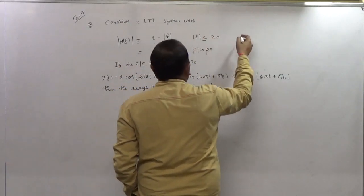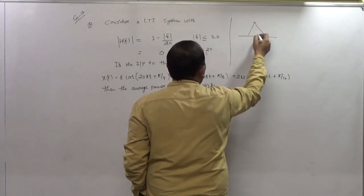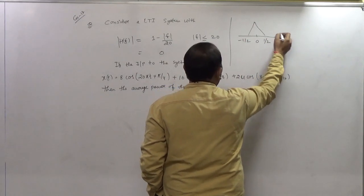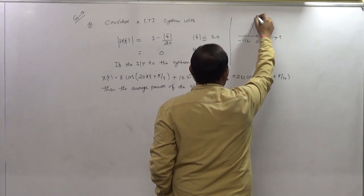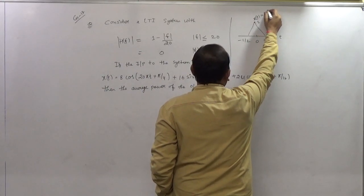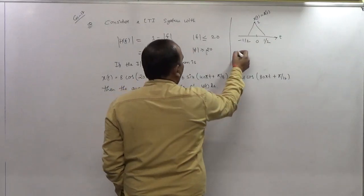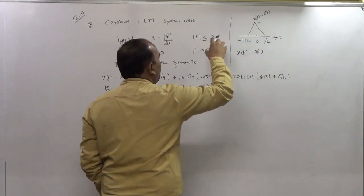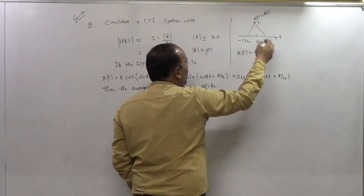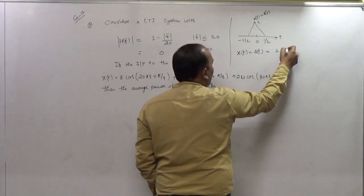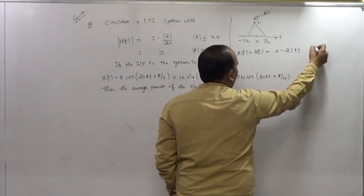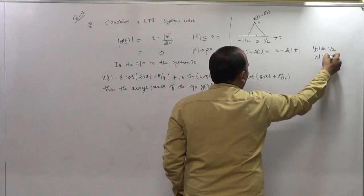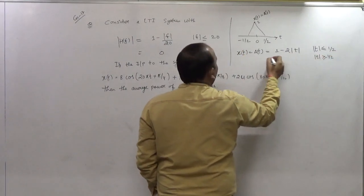What does it mean? If we have a triangular function with limits at -1/2 and +1/2, amplitude 1 and width 1, then it is defined as 1 - 2|T| for |T| less than 1/2, and 0 for |T| greater than 1/2.